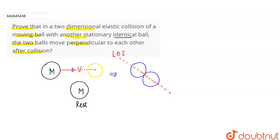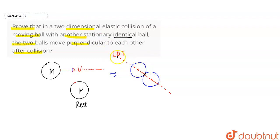Initially, the first body was moving in this direction — that is our line of motion. The second body was at rest. During the collision, both bodies have the same mass. The first body collides with the second body at this point, and the perpendicular to the collision surface at that point is called the line of impact. We know that during a collision, momentum and kinetic energy are conserved along the line of impact.